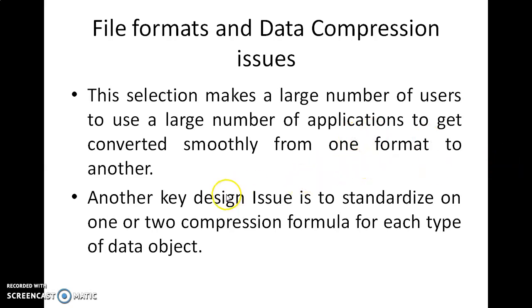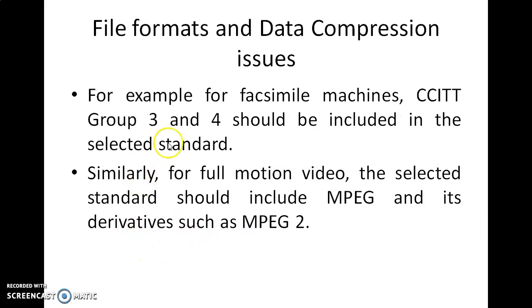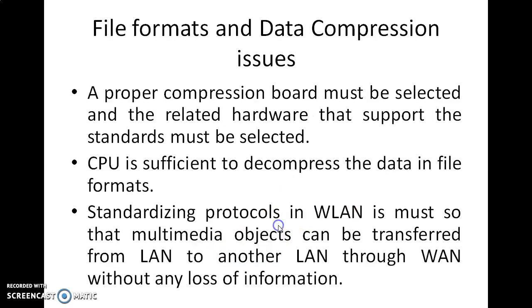Another key design issue is to standardize on one or two compression formulas for each data object. For example, fax machines — CCITT Group 3 and Group 4 — must be included in the selected standard. Similarly, for full motion video, the selected standard should include MPEG and its derivatives such as MPEG-2. A proper compression board must be selected, along with the related hardware that supports the standards, so that the CPU is efficient enough to decompress the data and the file formats.